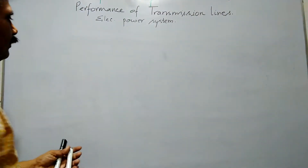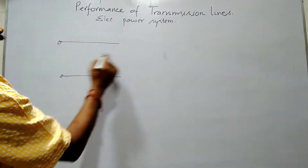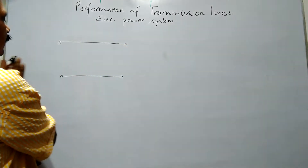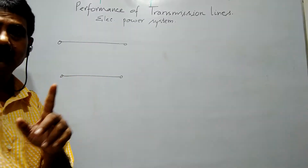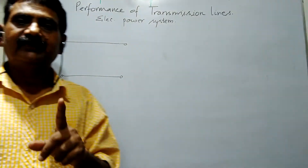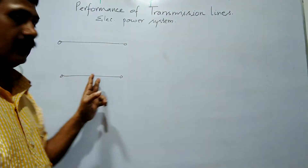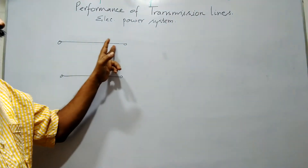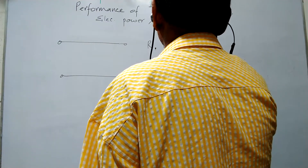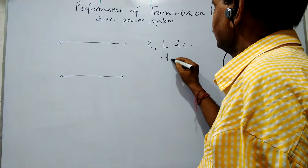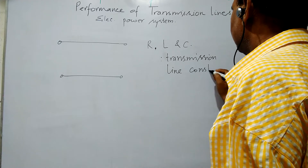Now, when we talk about a transmission line, obviously this is the transmission line with a receiving end and a sending end. When we are concerned with this transmission line, it will have at least two wires — for a single-phase system, one line and one neutral. The things related with a transmission line are R, L, and C, known as transmission line constants.